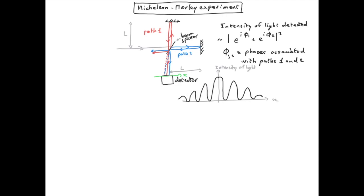In fact, it doesn't really matter if the distances l are slightly different because we can always adjust the position of the mirrors in order to have constructive interference for x equals zero.